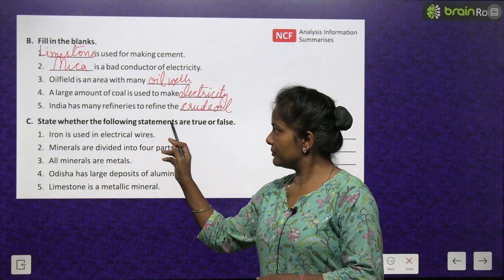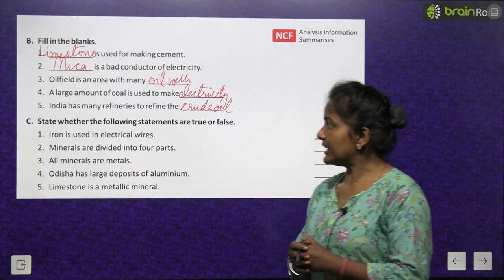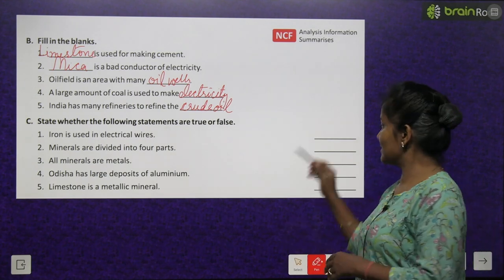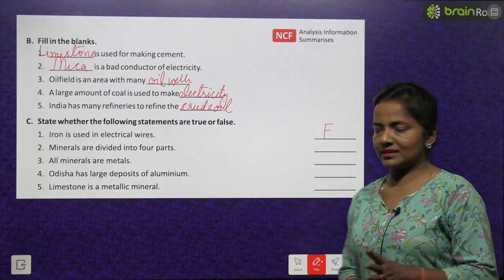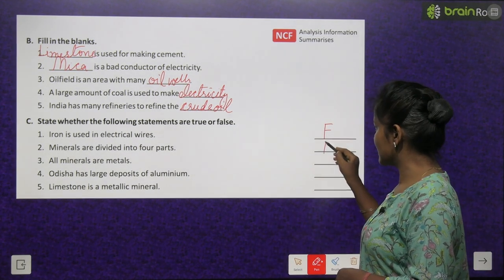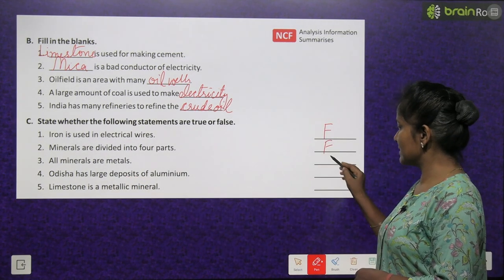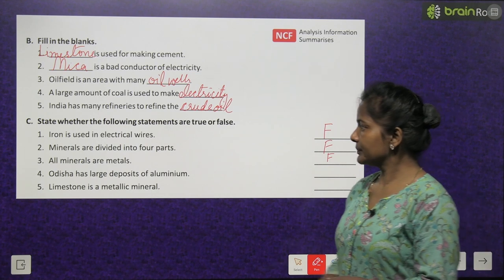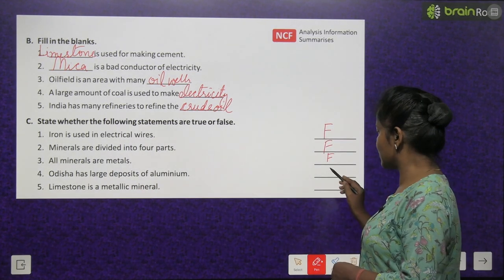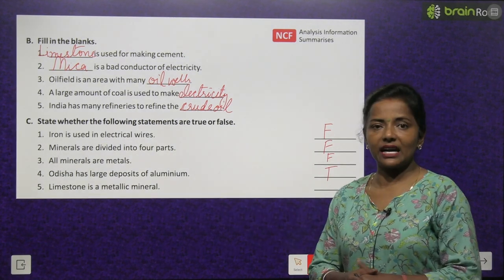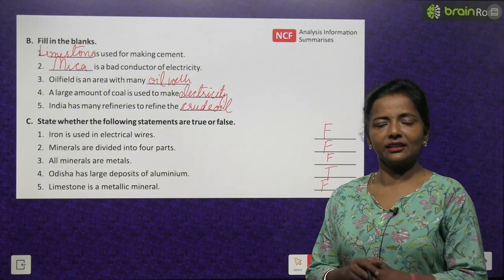State whether the following are true or false. Iron is used in electrical wires — False; iron is not used in electrical wires. Minerals are divided into four parts — False; they are divided into two parts. All minerals are metals — False. Odisha has large deposits of aluminium — True. Limestone is a metallic mineral — False; limestone is a non-metallic mineral.